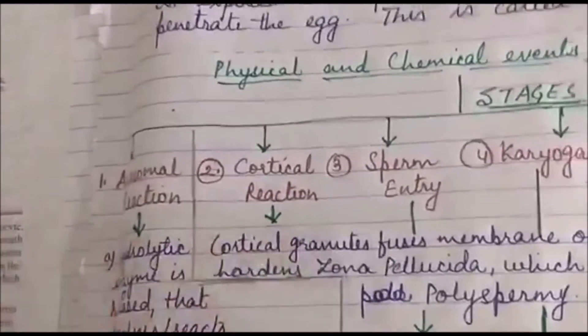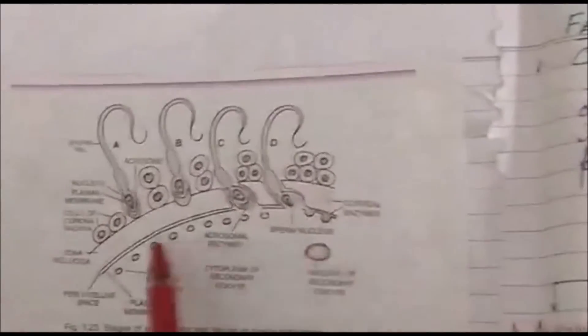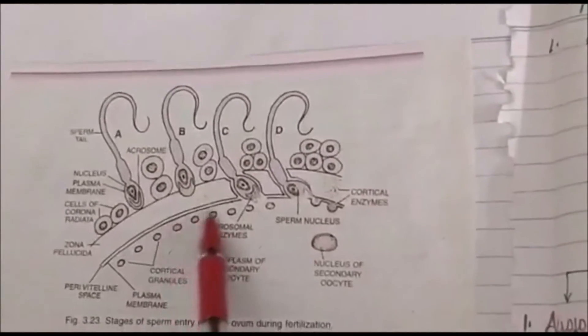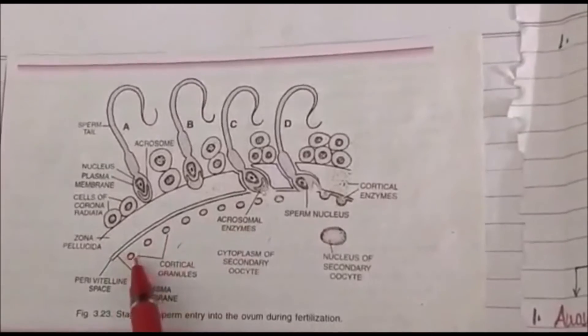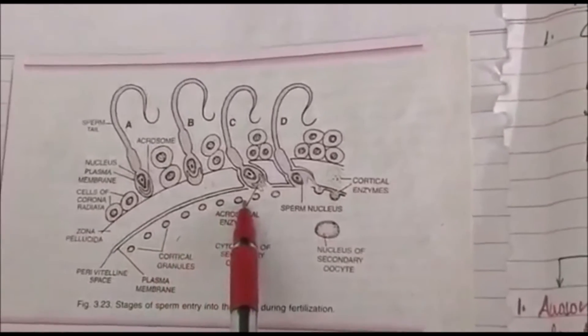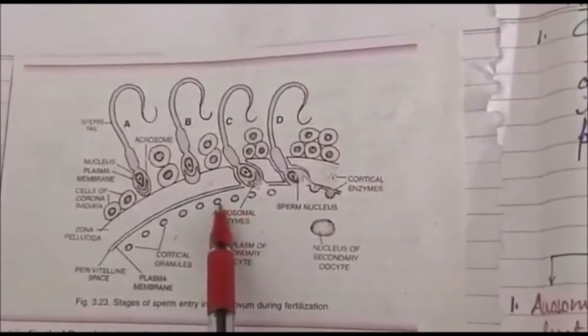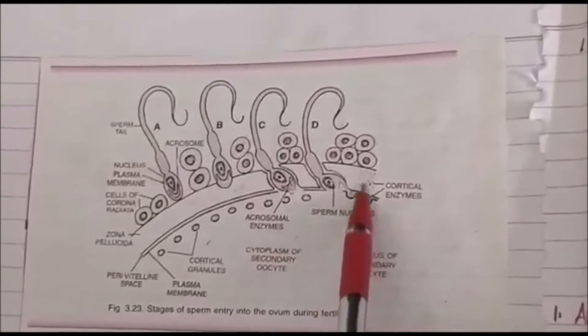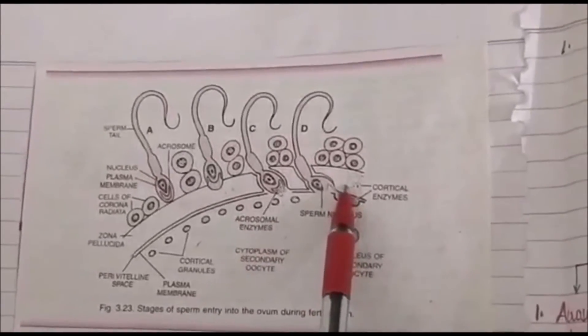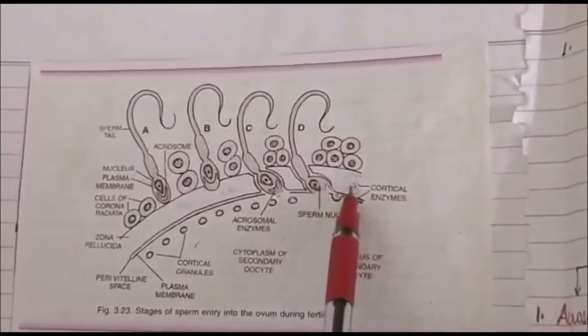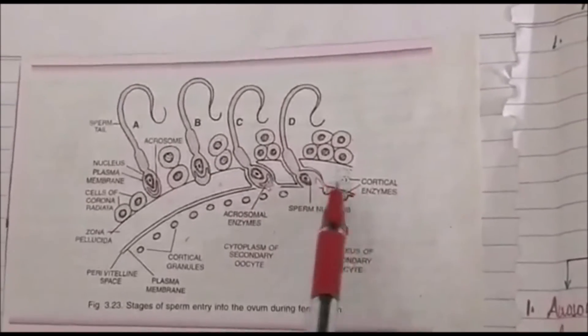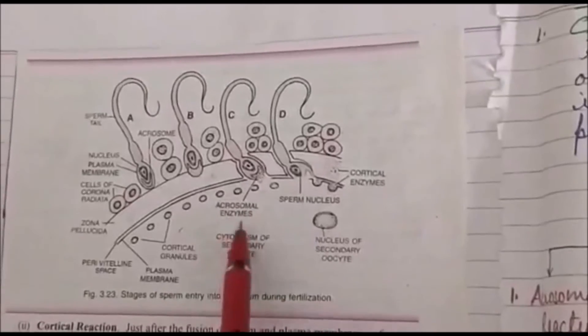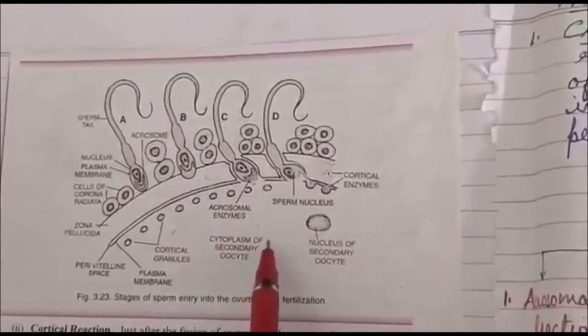Second, we come to cortical reaction. In cortical reaction, if you remember, in the secondary oocyte, just below the plasma membrane of the secondary oocyte, there are some granules known as cortical granules. These cortical granules fuse with the plasma membrane of the oocyte and make the zona pellucida hard. This again prevents polyspermy. These are the two ways by which polyspermy is prevented.